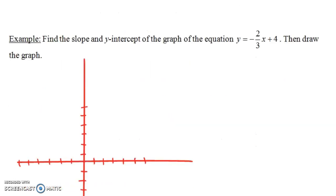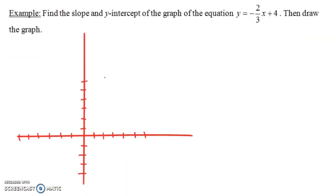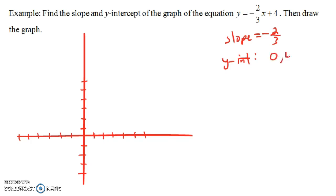Let's do an example. Find the slope and the y-intercept of the graph of the equation y equals negative 2/3 x plus 4. Notice that the slope is negative 2/3 — that's our m — and our y-intercept is 4, or the point (0, 4).